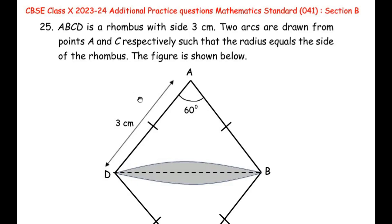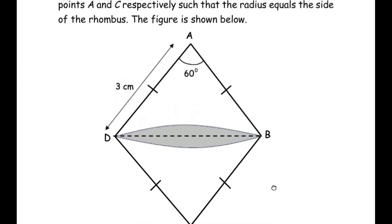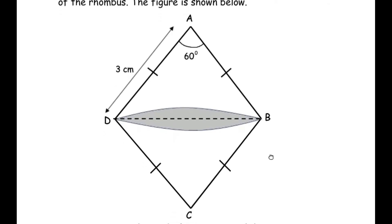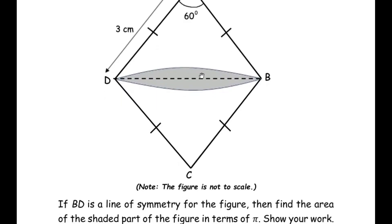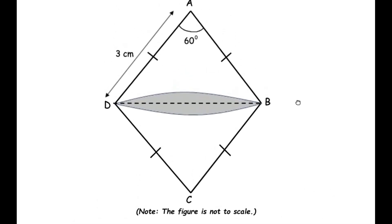This question belongs to the 'Areas Related to Circles' chapter. ABCD is a rhombus with side 3 centimeters. Two arcs are drawn from points A and C respectively such that the radius equals the side of the rhombus, as shown in the figure. If BD is a line of symmetry for the figure, find the area of the shaded part in terms of pi.